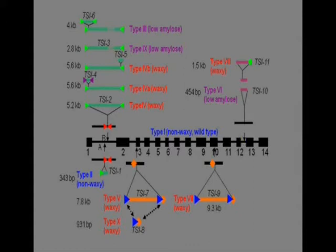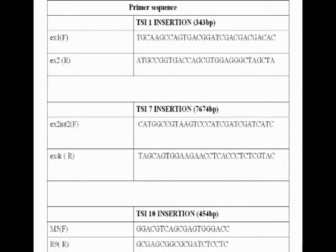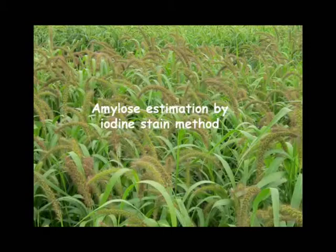96 samples from the core collection of foxtail millet germplasm were collected from various parts of India for FMP analysis. Forward and reverse primers were used to amplify the transposable segment insertions. The seeds of foxtail millet core collection were obtained from the Millet Breeding Station, Tamil Nadu Agriculture University. The 96 samples cover various parts of India like Andhra Pradesh, Karnataka, Himachal Pradesh, Gujarat, etc. Accession numbers were given for the samples and added to the germplasm core collection.